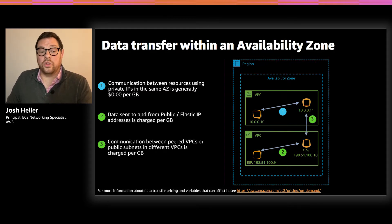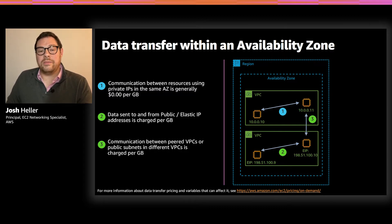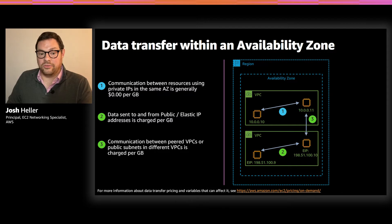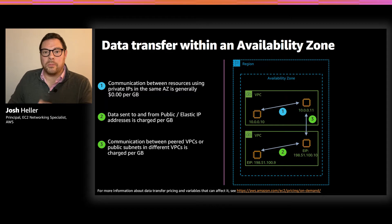The last scenario on this slide is how data transfer works when communicating between two VPCs. VPCs can be connected through a process called peering — either directly or via AWS Transit Gateway. In either case, there's a charge for instances communicating across the VPC boundary. In the case of direct peering, there's a simple per-gigabyte charge for communication in each direction, inbound and outbound.